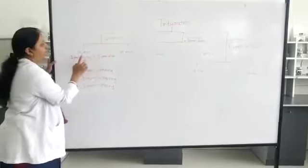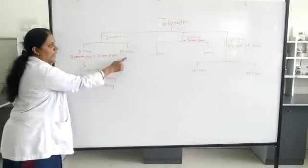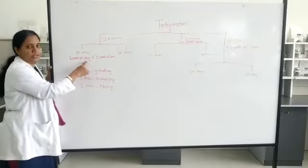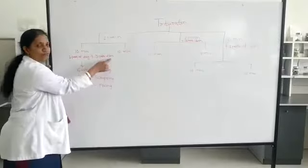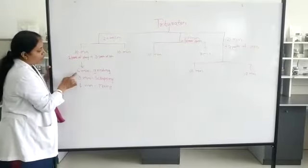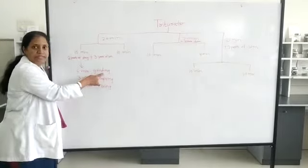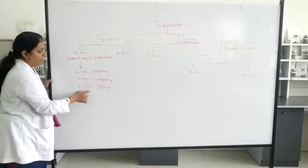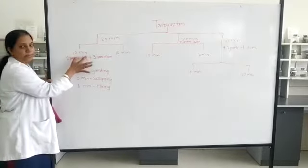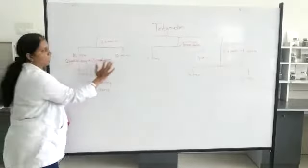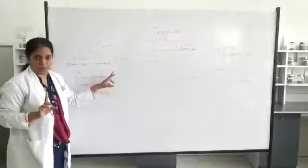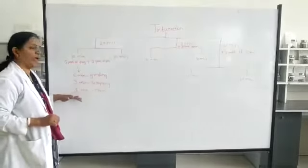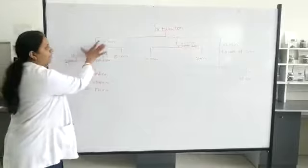Each 20-minute phase is divided into two cycles of 10 minutes each. In the first 10 minutes: grind for 6 minutes, scrape for 3 minutes, and mix for 1 minute. Then the same cycle is repeated for the next 10 minutes without adding any additional sugar of milk — 6 minutes grinding, 3 minutes scraping, and 1 minute mixing. This completes the first 20 minutes.